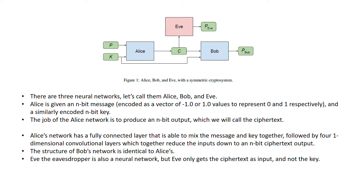This is the setup: it consists of Alice, Bob, and Eve. Alice has the plaintext and the key, and Alice generates the ciphertext C, which is received by Bob. Bob also has the key, which is used to decrypt the ciphertext back to plaintext. Eve receives the ciphertext but does not have any key. The job of Alice is to produce an n-bit output which we call ciphertext. Alice's architecture has a fully connected layer as the first layer, followed by four convolutional layers that operate on the permuted values generated by the network.